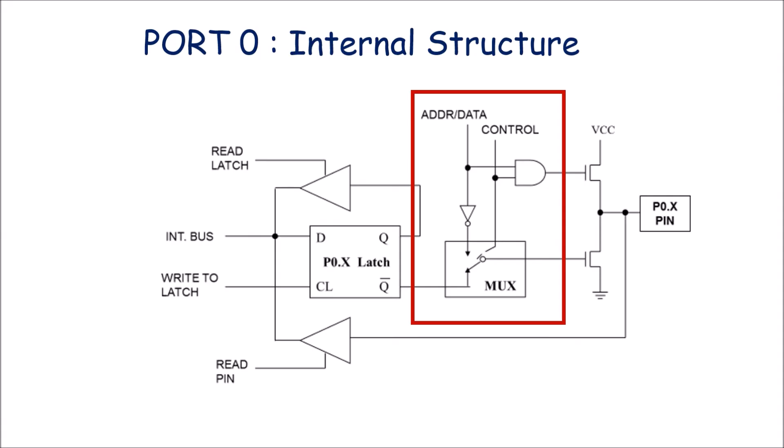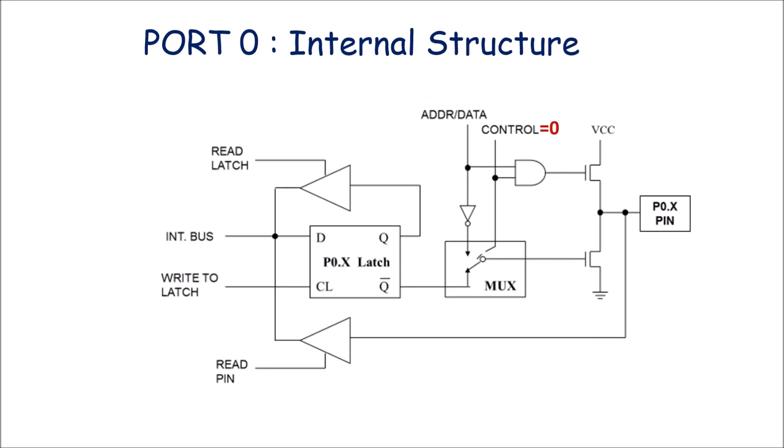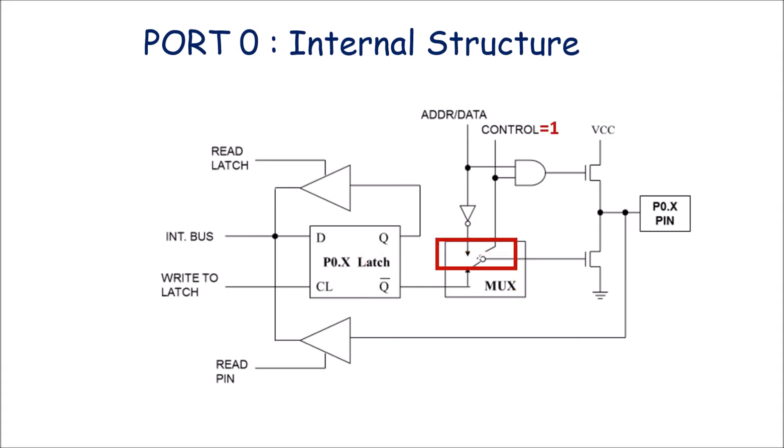When the control signal is 0, the port is used as an input-output port, and the MUX connects the Q bar output of the D latch to the gate of the FET switch. When the control signal is 1, the port acts as a multiplexed address and data bus, and the gate terminal is connected to the address-data bus structure.